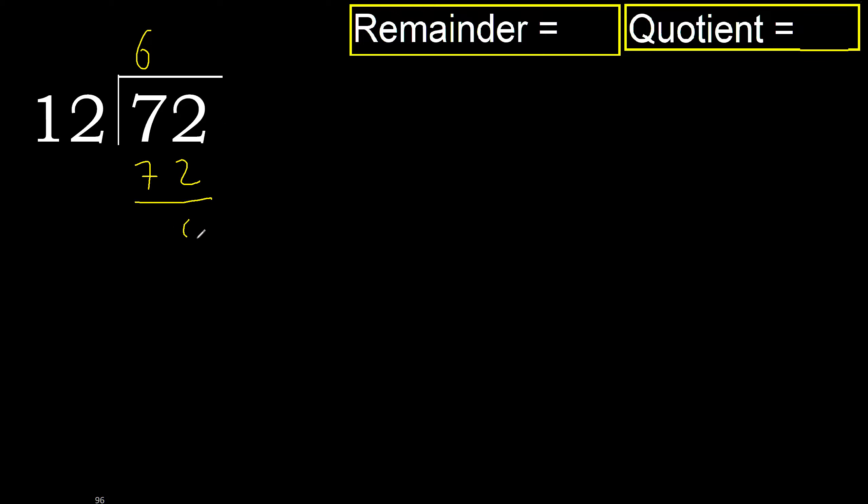Subtract — remainder is 0. There are no more digits, therefore we finish. The division is complete.